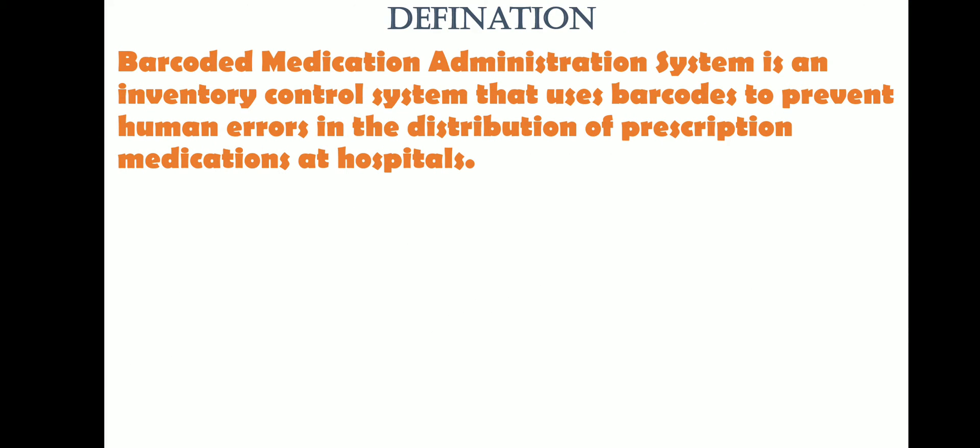So what is the definition of the Barcode Medication Administration System? It is an inventory control system that uses barcodes to prevent human errors in the distribution of prescription medication at hospitals. This is an inventory control system that manages your stock and prevents wrong medicines from being given.